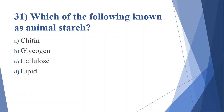Thirty-first question: which of the following is known as animal starch? Option A: chitin. Option B: glycogen. Option C: cellulose. Option D: lipid. Answer is option B, glycogen.